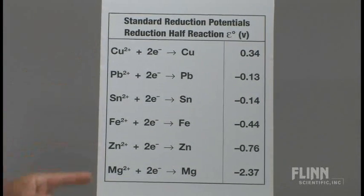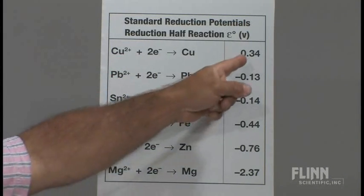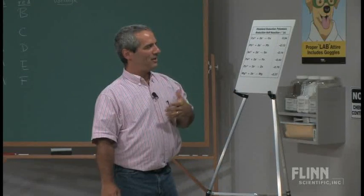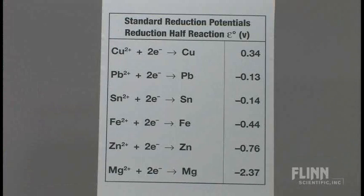These are all the reduction half reactions, and these are the standard reduction potentials. What does that mean? You could think of that as the tendency, or strength, of that ion to pull electrons toward it.